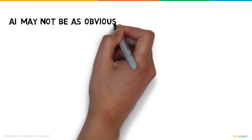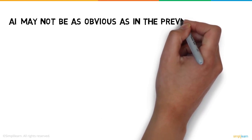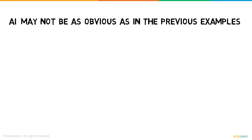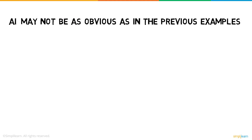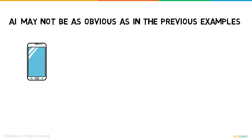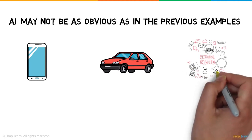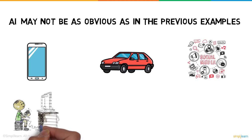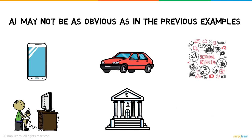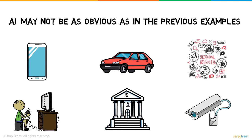AI may not be as obvious as in those examples. In fact, AI is used in smartphones, cars, social media feeds, video games, banking, surveillance, and many other aspects of our daily life.